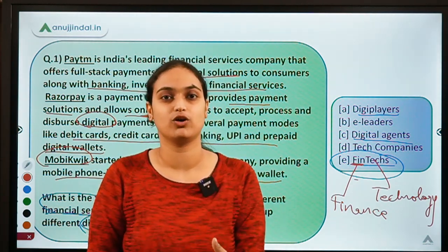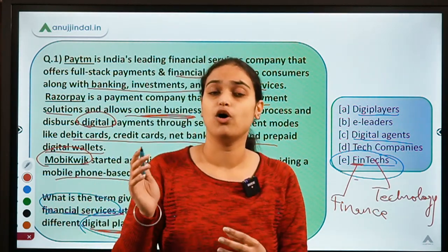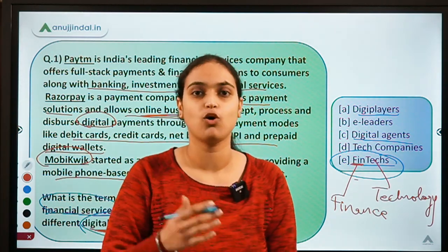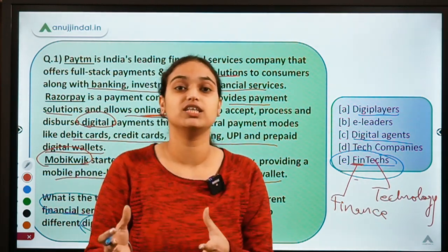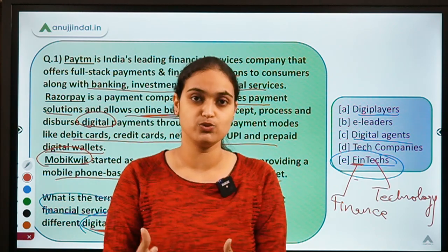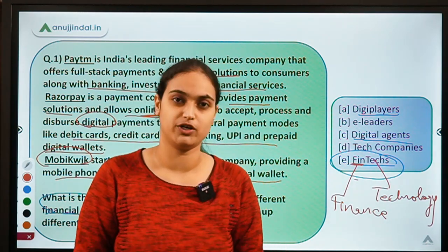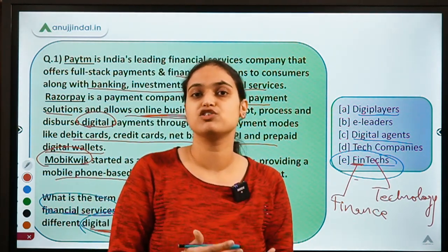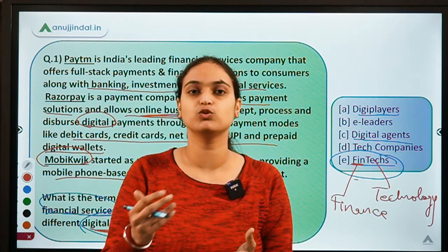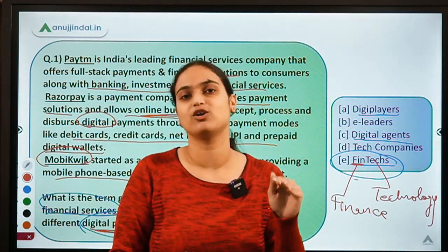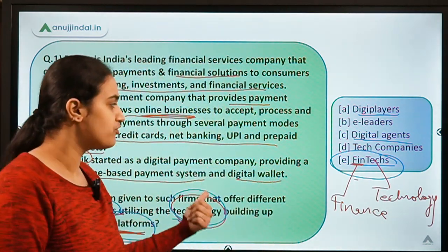Obviously, when you are buying goods and services online, you are making payments using online platforms like debit cards, credit cards, e-wallets, UPI transfers, or net banking. All these are technologies — digital means which you are using to access financial services. Not only this, you can also buy different financial products online. For example, if you want to purchase an insurance policy, you can go to policybazaar.com. These are all technological platforms rendering financial services.